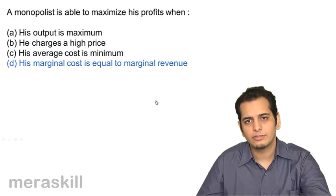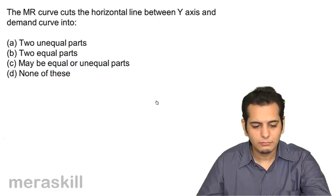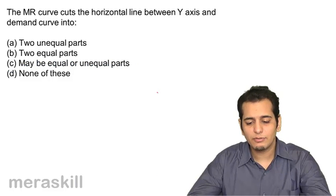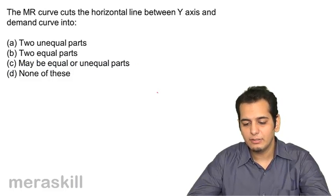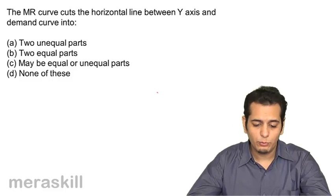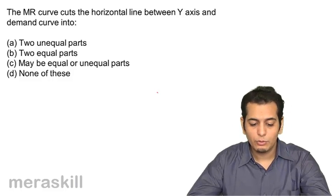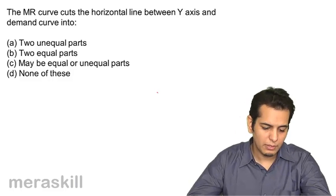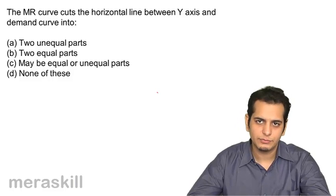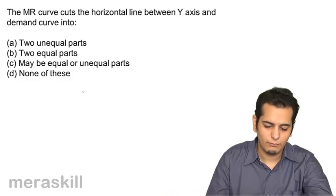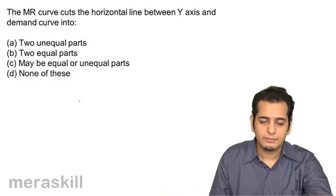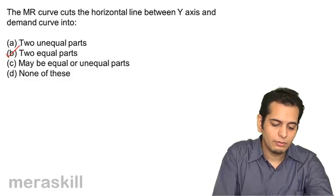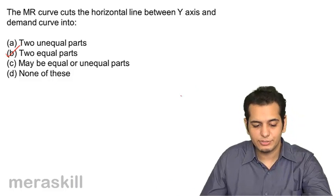Let's check. Next, the MR curve cuts the horizontal line between the Y-axis and the demand curve into: a) two unequal parts, b) two equal parts, c) may be equal or unequal parts, d) none of these. The answer is b) two equal parts.